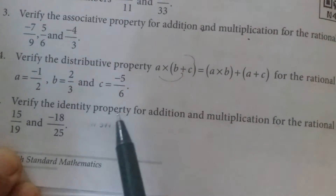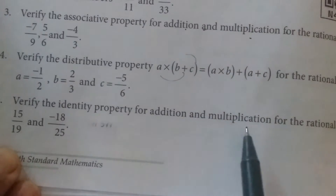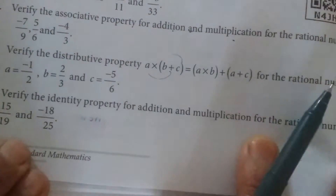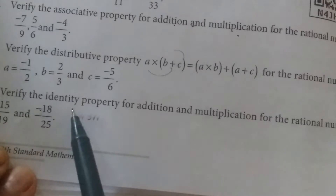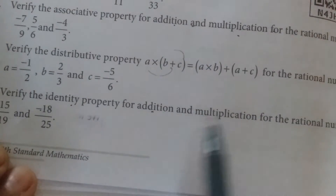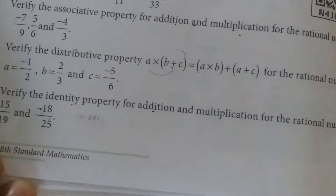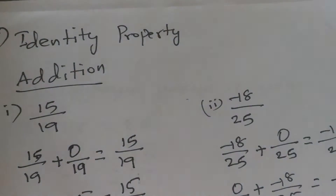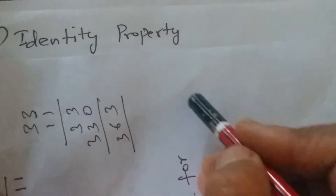Question 5: Verify the identity property for addition and multiplication for the rational numbers 15/19 and −18/25. We have two numbers and we need to check the identity property for both addition and multiplication. Let us check the identity property for addition first for both numbers, then we will check multiplication.